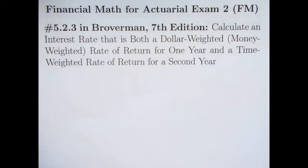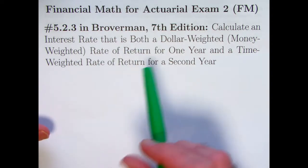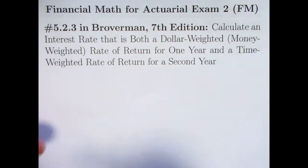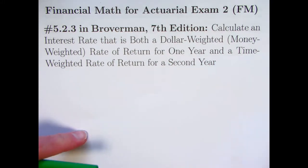It's related still to dollar-weighted and time-weighted rates of return, so it's still stuff you should know about. Problem-solving-wise, it's a little tougher than the examples from the last couple videos. We'll be calculating an interest rate that is both a dollar-weighted or money-weighted rate of return for one year and a time-weighted rate of return for a second year.